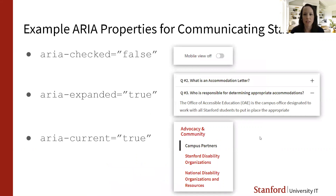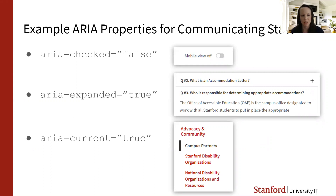Some other ARIA properties are used for communicating state. One of the screenshots I had was for a switch that toggles on and off — in this case a mobile view toggle in a survey preview, currently shown as off. If you mark this up with role equals switch, you add aria-checked equals false because it's currently off. When someone clicks it to turn it on, that changes to aria-checked equals true. You could also use a checkbox for this, which gets into the topic of when to use ARIA and maybe when not to.